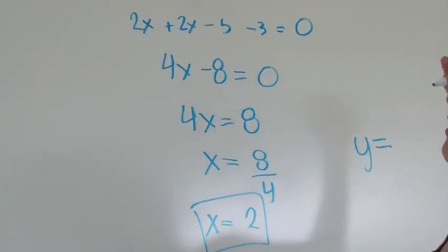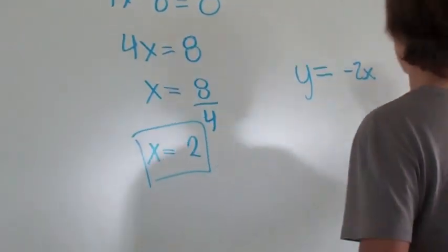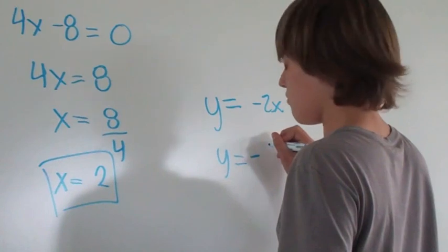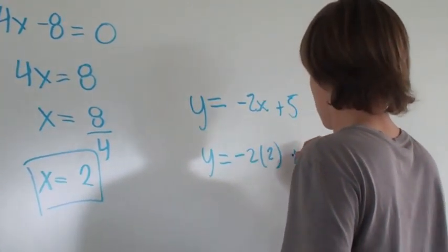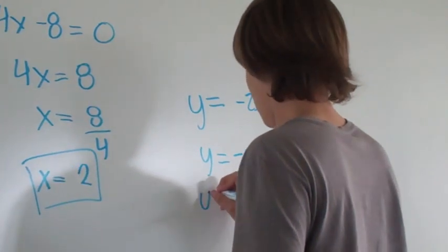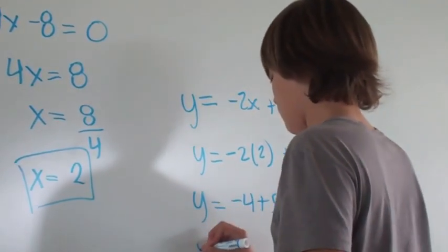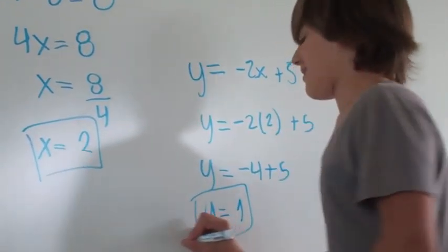Did anyone else arrive to that same solution? x equals 2? How many? 1, 2, 3. We have lots of confirmations. Very good. So x equals 2 and y equals 1.